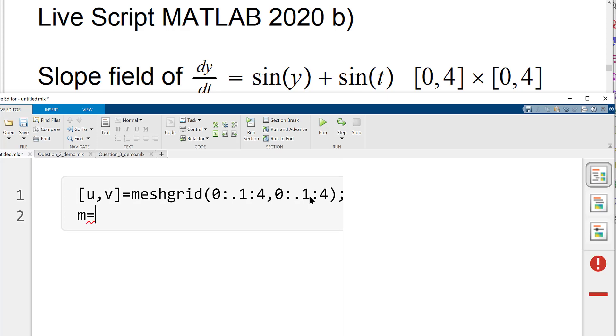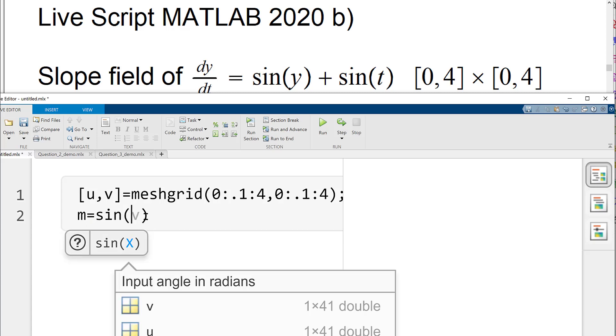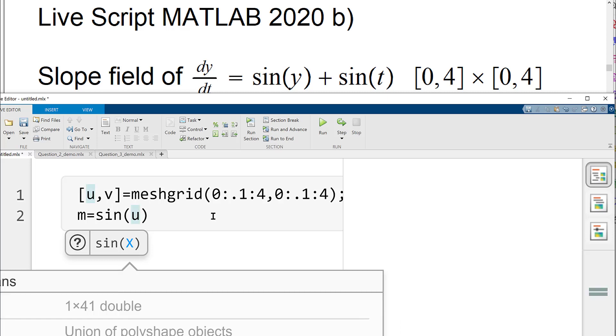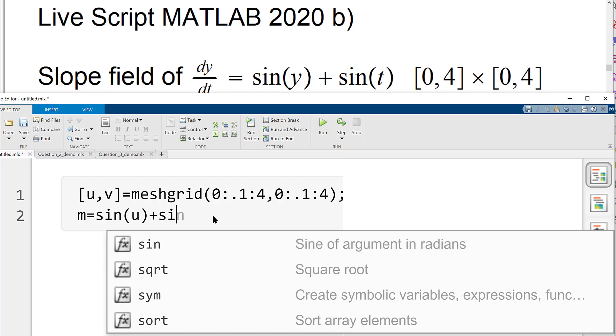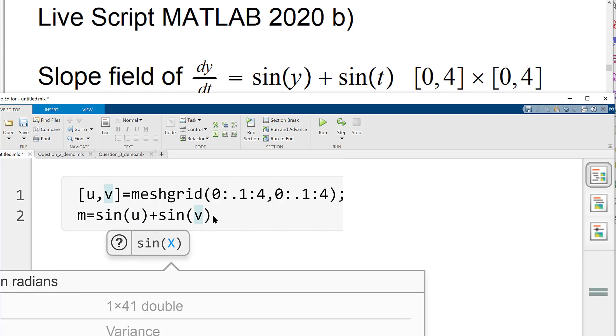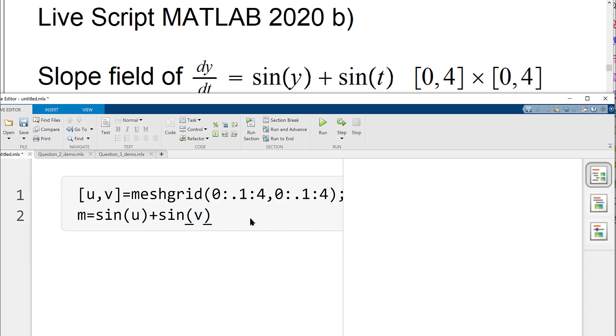And then our slope is this, right? dy/dt is the slope. So the slope is, since we are taking u and v, we will just type in sin(u) plus sin(v) here, and then just suppress the output.